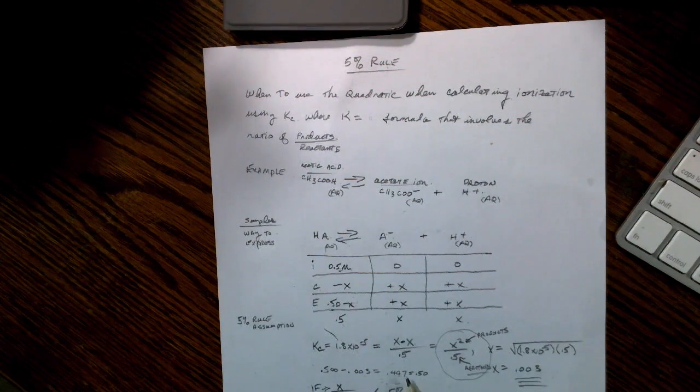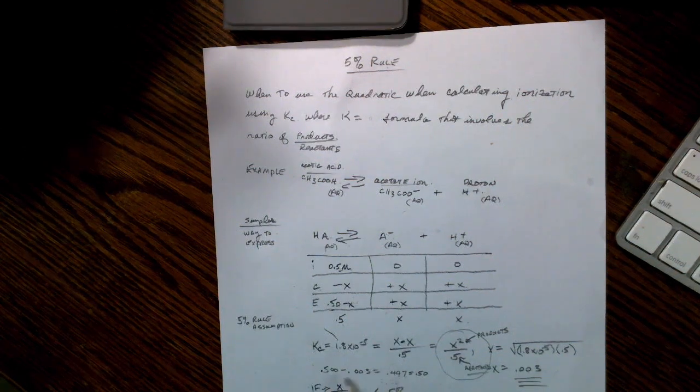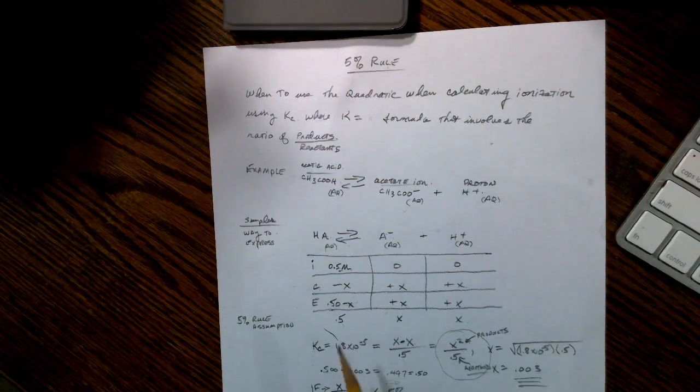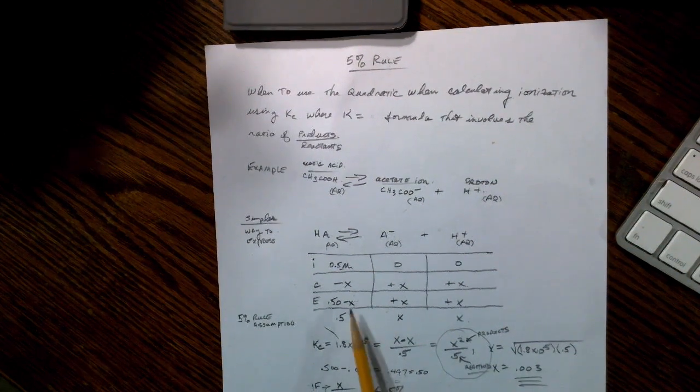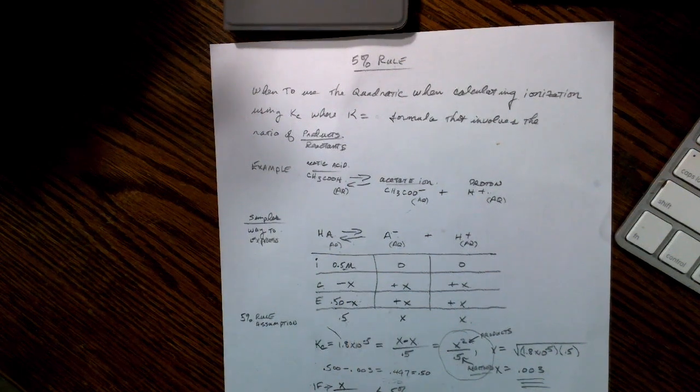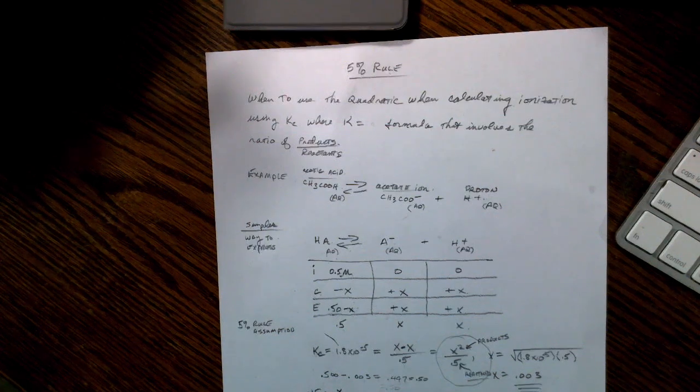Now, the interesting thing here is 0.497, it's three significant figures. If we look at this as two significant figures, it's actually 0.5. So they're the same. We're starting to drive towards the conclusion that our assumption is correct, that we don't really need to have a real value here. We can just say that it starts at 0.5 and it ends at 0.5, even though it loses a little smidge of x.